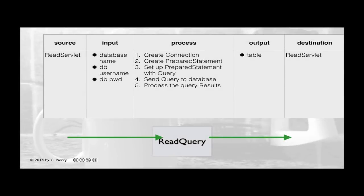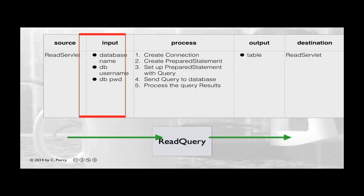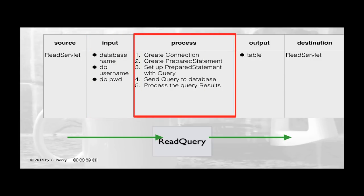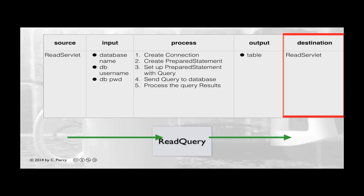Here's the IPO table for our read query class. Notice that both the source and the destination of read query is the read servlet, so it's basically a helper class for the read servlet controller. Read servlet will pass the database name, the database username, and the database password into read query. Read query will create a connection, create a prepared statement to hold the query, set up the prepared statement with the query, send the query to the database, and after receiving the results, process them to make an HTML table, which it will then pass back to the read servlet.